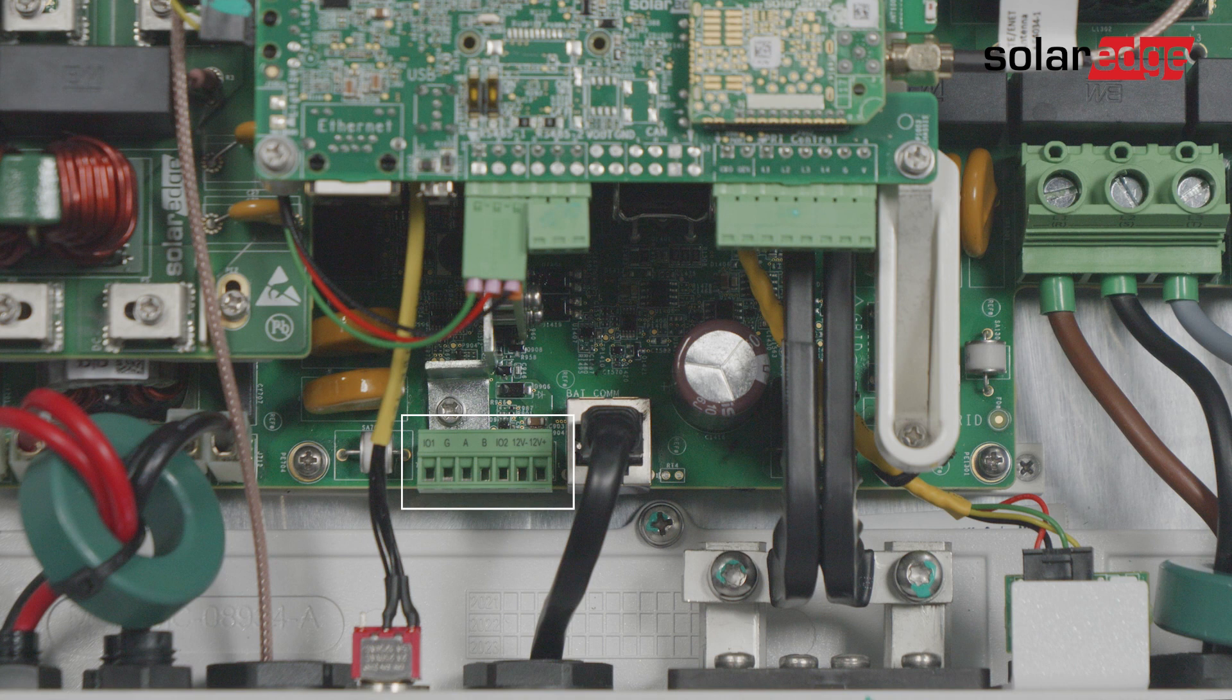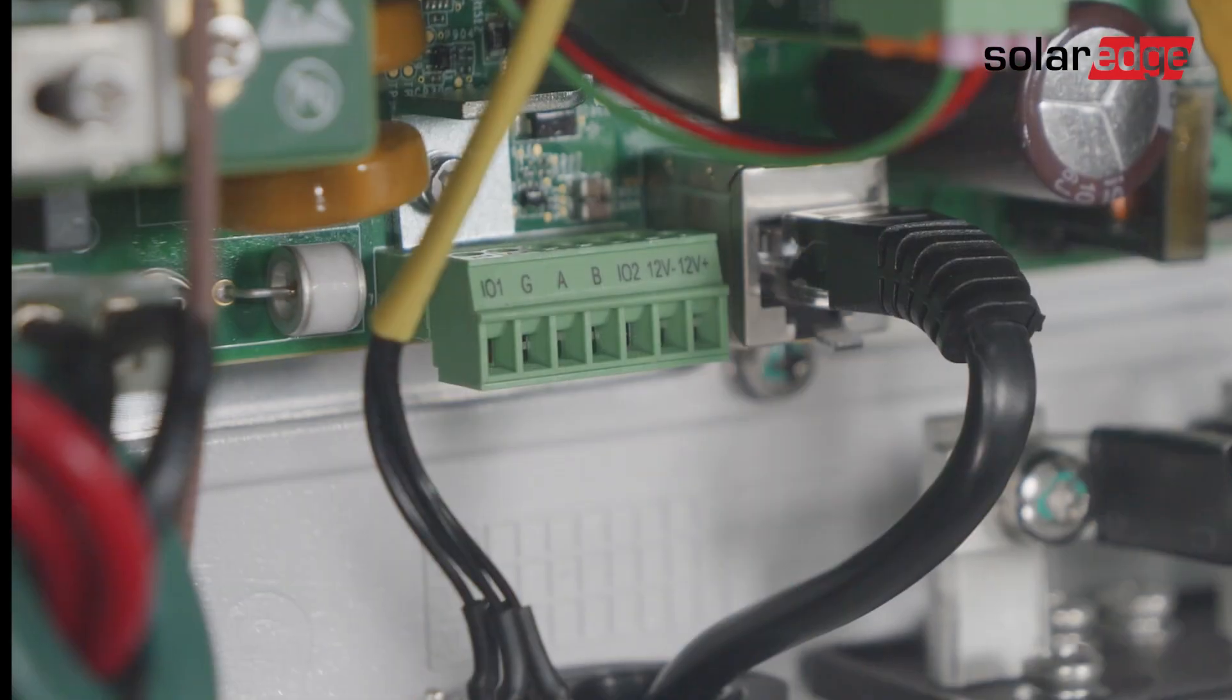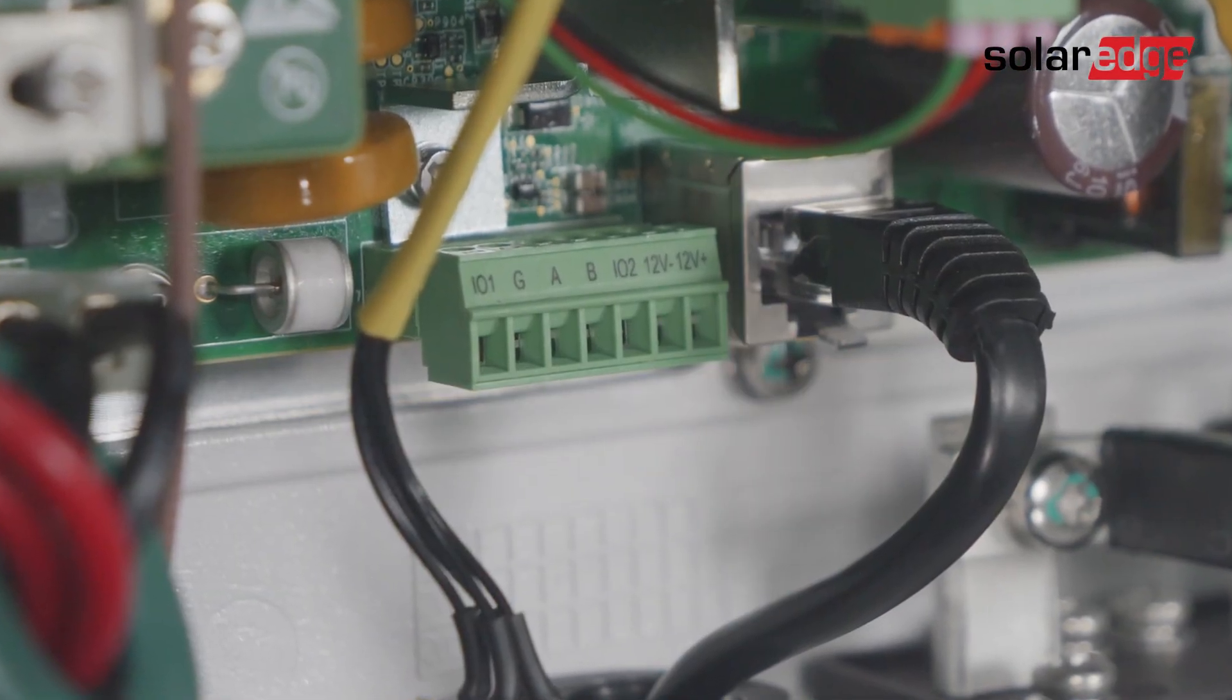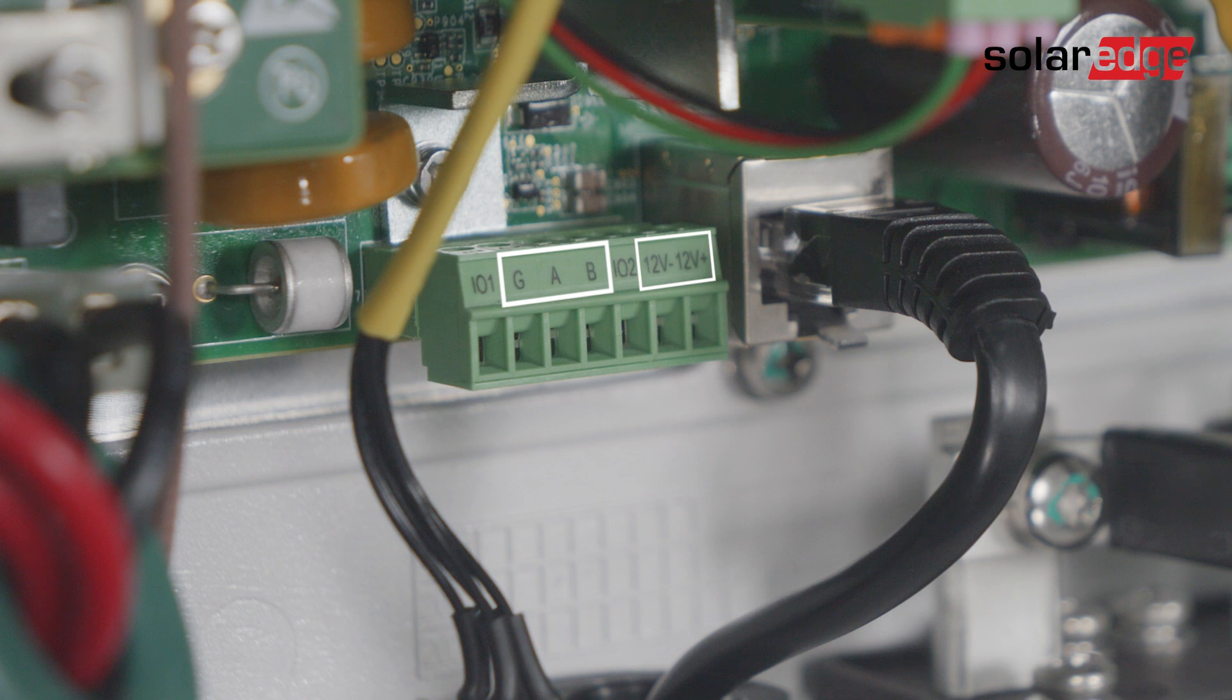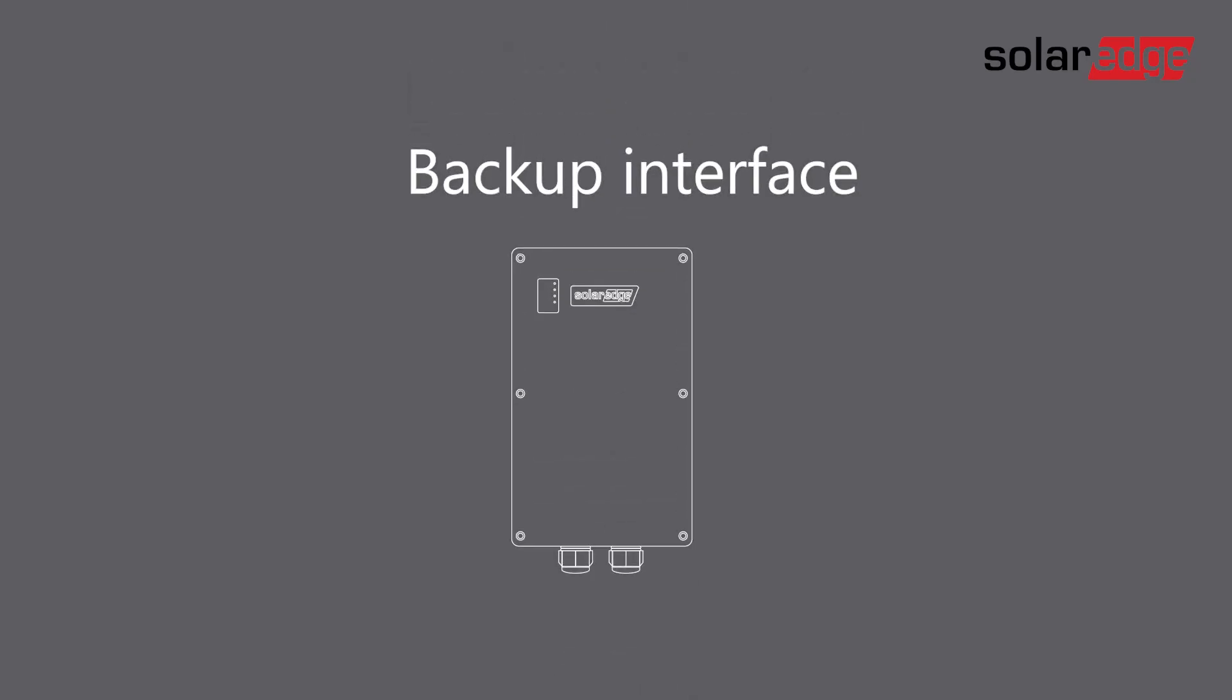This 7-pin connector is used to connect the backup interface or the energy meter. In case you have a backup interface, use a 5-wire cable to connect it to the inverter in the following scheme. If you don't have a backup interface in your system, use a 3-wire cable to connect the meter to the same connector in the following scheme. For both options, SolarEdge recommends using a CAT-5 cable. In this video, we will show the backup interface connection.